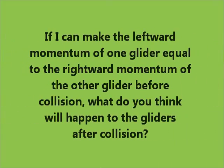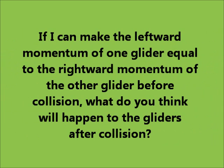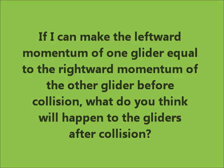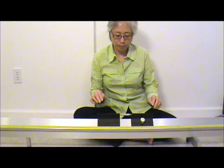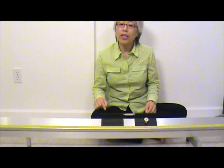Now let's try a few more completely inelastic collision scenarios. If I can make the leftward momentum equal to the rightward momentum before collision, what do you think will happen to the gliders after collision? The net momentum of the system is zero, so the gliders should come to stop after the collision.